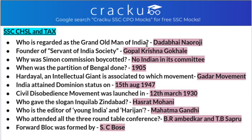Why was the Simon Commission boycotted? It was boycotted because it had no Indians in its committee. Simon Commission's goal was to review the flaws in the Government of India Act 1919 and to work on the constitution of India. When you are working on a country's constitution, you must have at least one or two members from that country, but the Simon Commission had no Indians — so it was boycotted by everyone in India. When was the partition of Bengal done? It was in 1905.